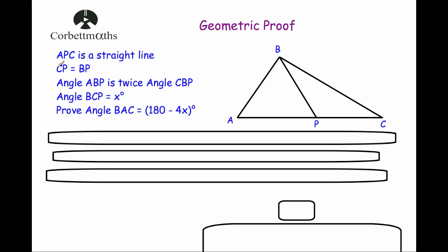We've been told that CP equals BP, so let's mark that on. We've also been told that angle ABP — this angle here — is twice angle CBP. So this angle is twice that angle. We've also been told that angle BCP, this angle here, is equal to x. And the question asks us to prove that angle BAC — this angle — is equal to 180 degrees minus 4x.